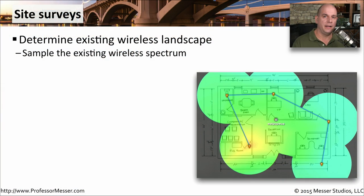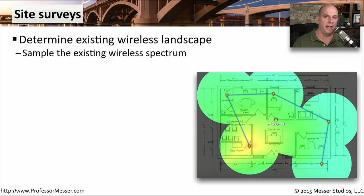If you're connecting a wireless device for the first time, simply choosing a random frequency and plugging it into the network is probably not going to be your best course of action. You may find that you're conflicting with other devices and other frequencies that are in use, and therefore the performance of your wireless network is going to suffer. The first thing you should do is to perform a site survey. You need to understand exactly what frequencies are in use and how you could best configure your access point to work optimally in that environment.